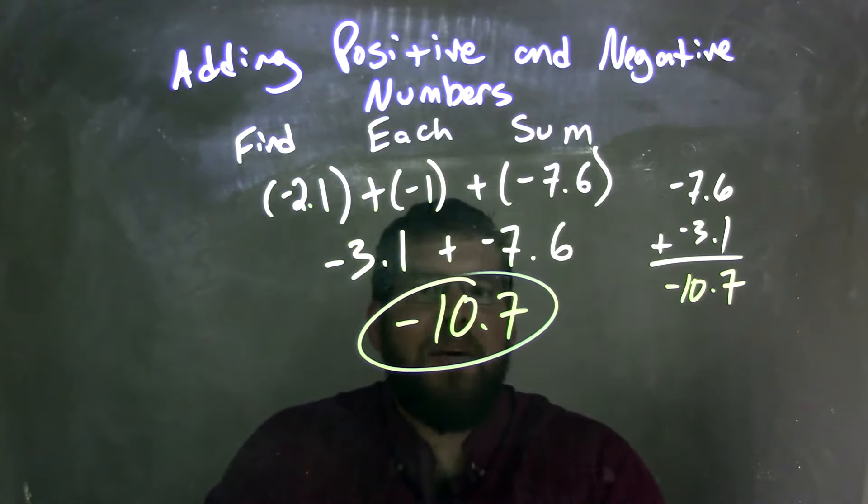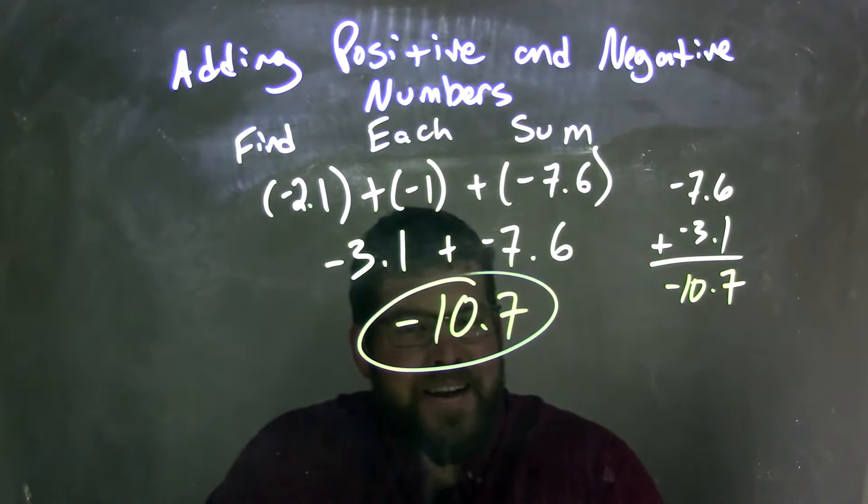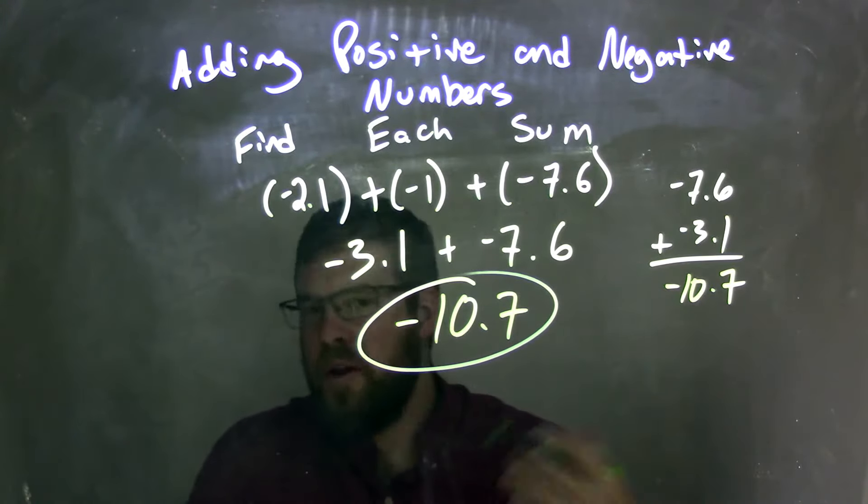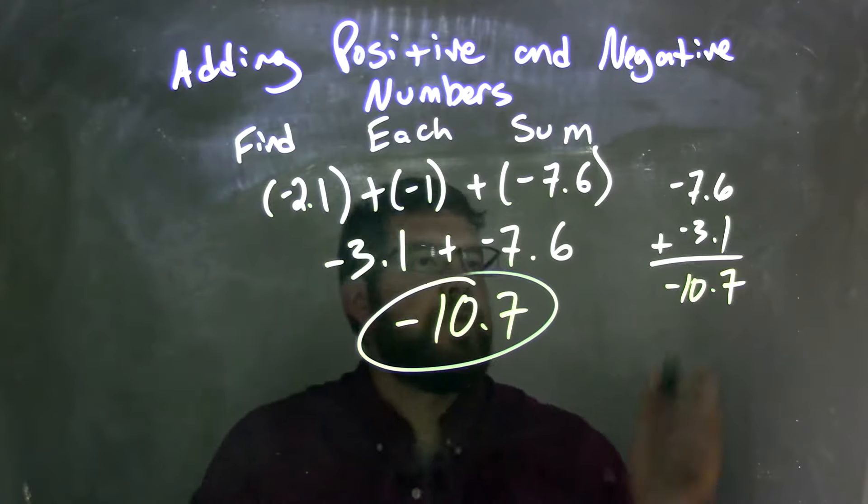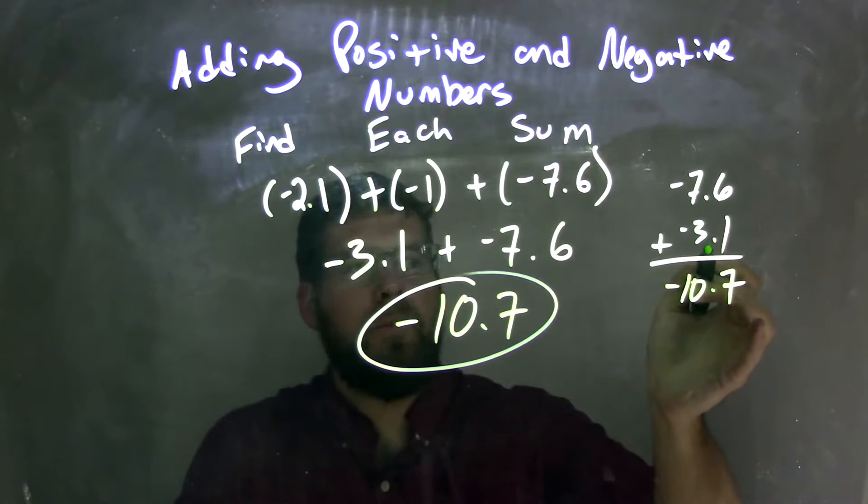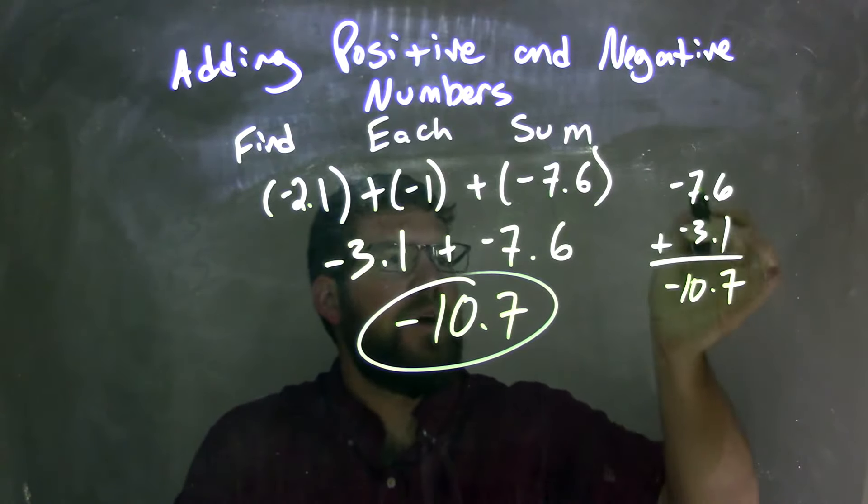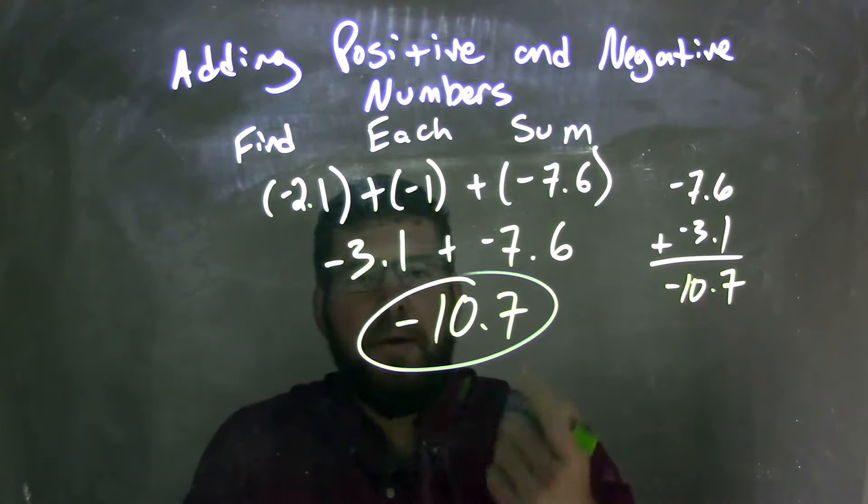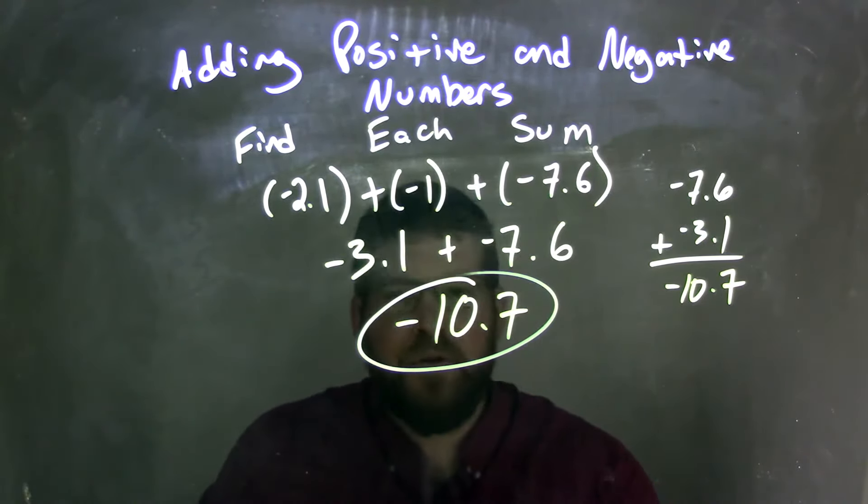We know that two negative numbers added together just become a larger negative number, so I just added it like I would any two normal positive numbers. Negative 7.6 plus negative 3.1: 6 plus 1 is 7, negative 7 plus negative 3 is negative 10. And we have negative 10.7 as our final answer.